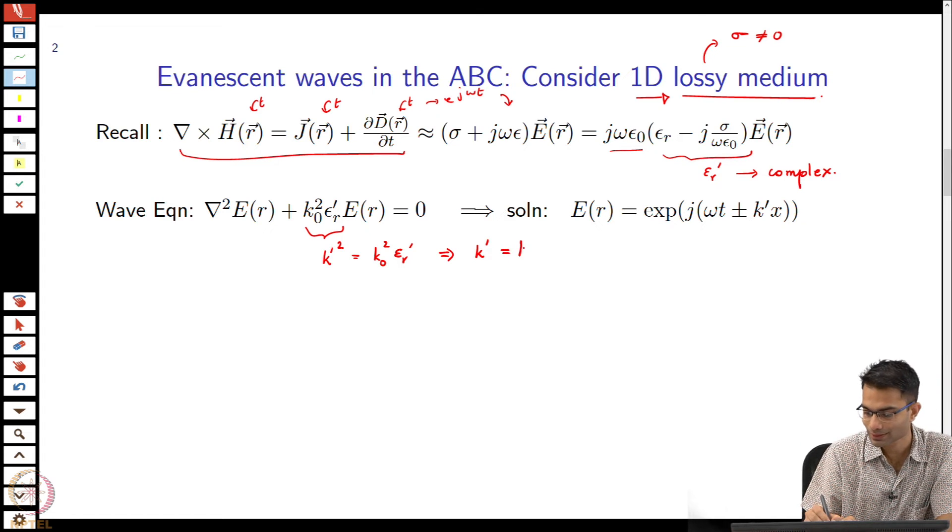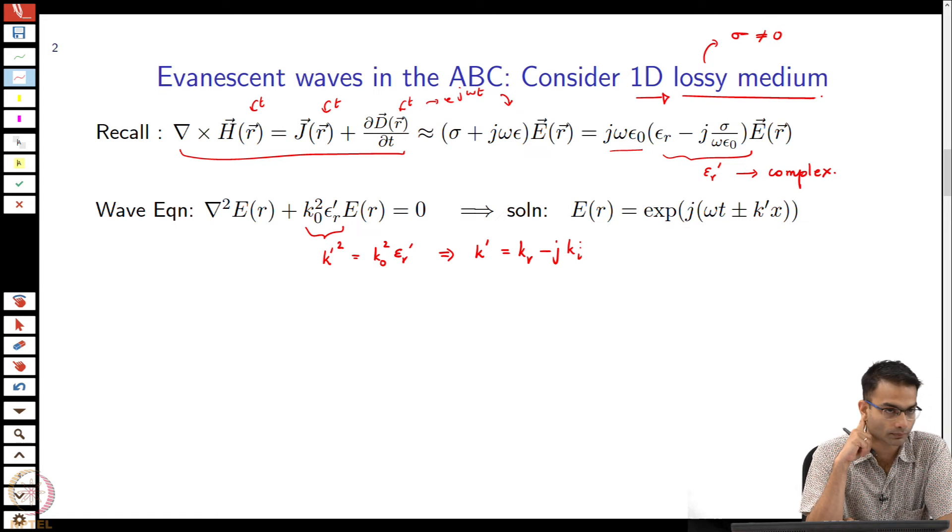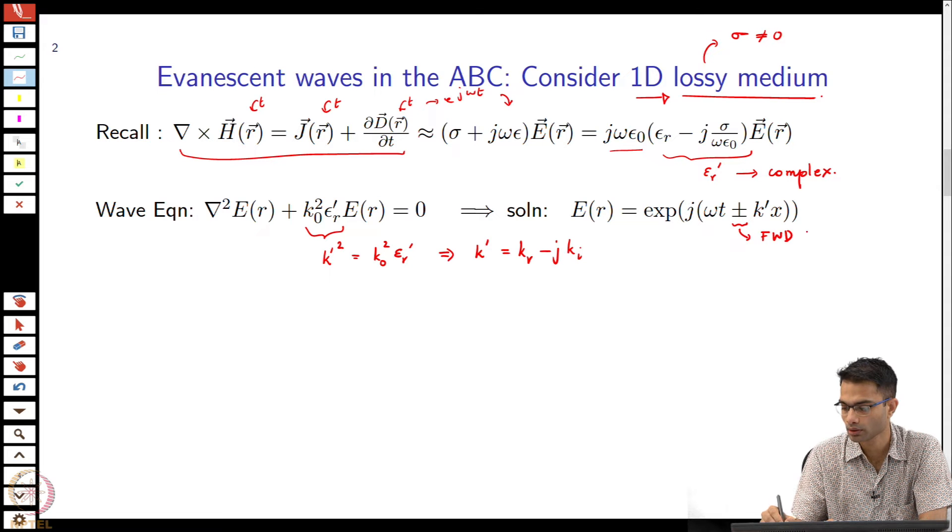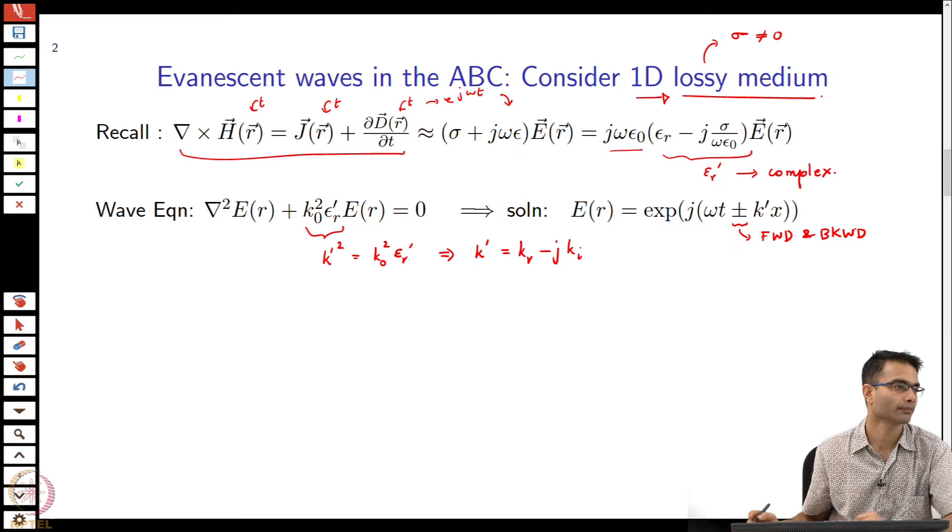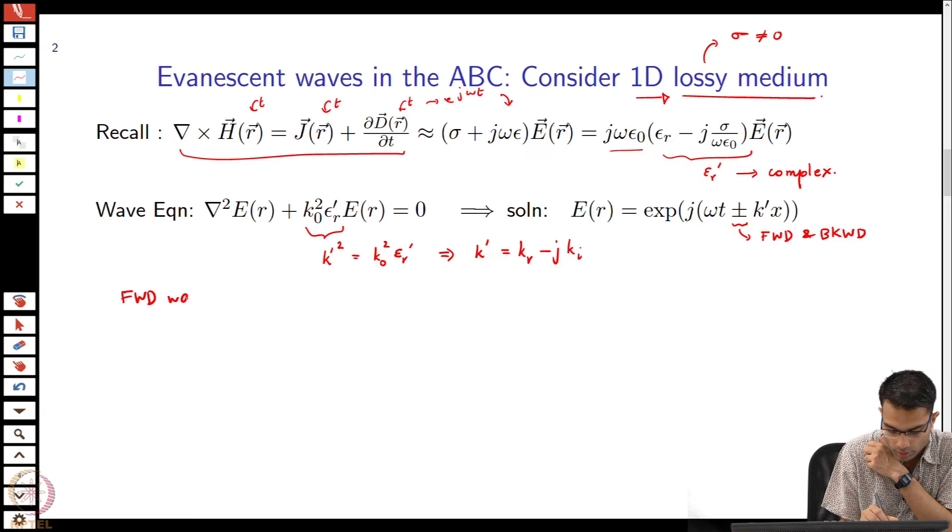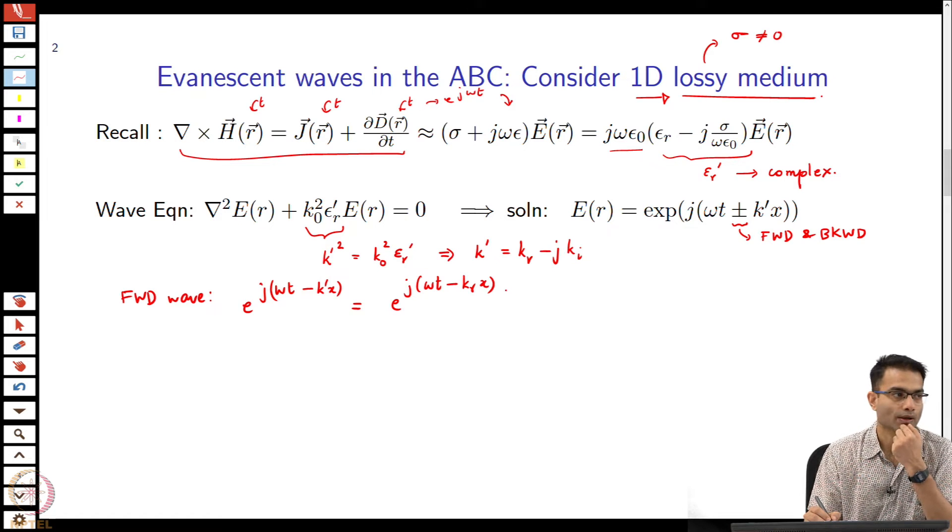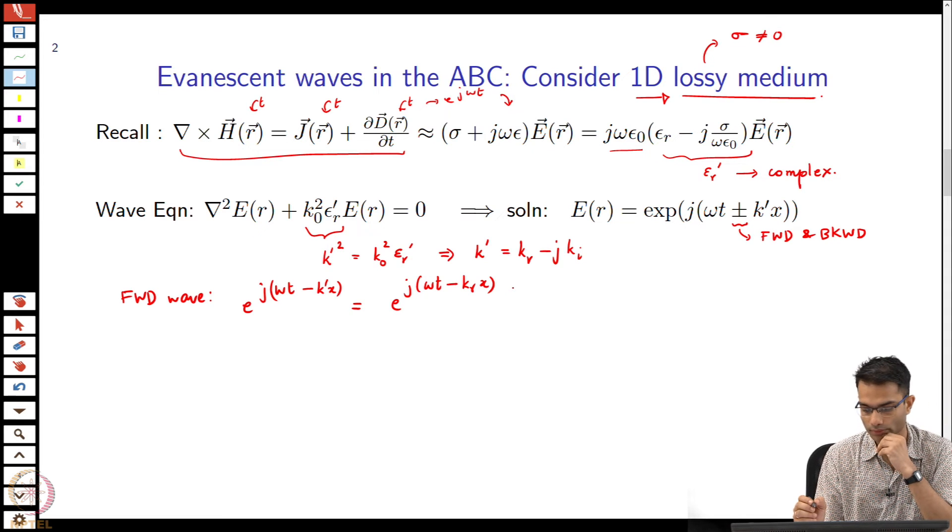When I solve this wave equation, this is the solution that I get as before, no surprises over here. What is this k prime squared? k prime squared is equal to k naught squared epsilon r prime. From here I can get k prime as a square root of this expression. Square root of a complex number is going to give me a complex number. So I am going to write this as k some real part minus j times k some imaginary part.